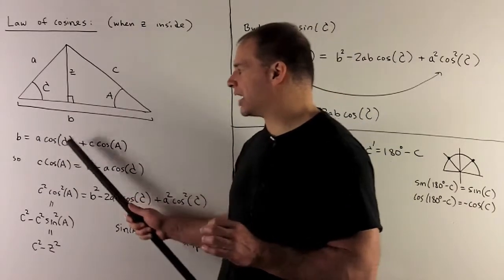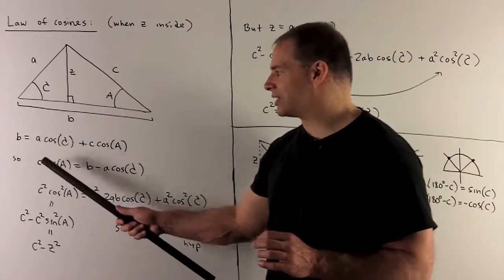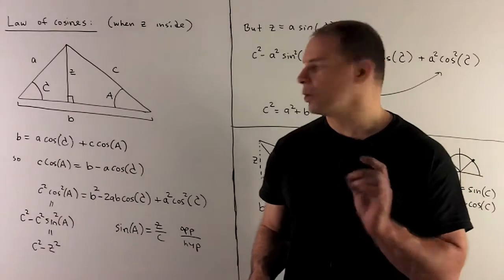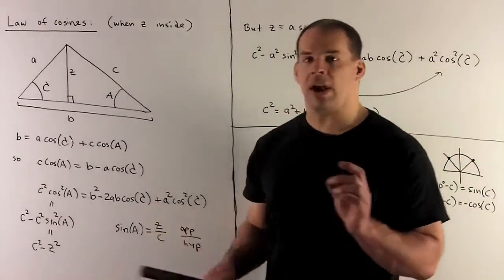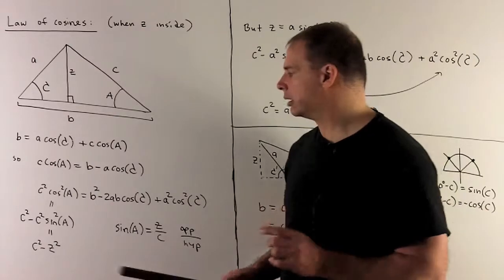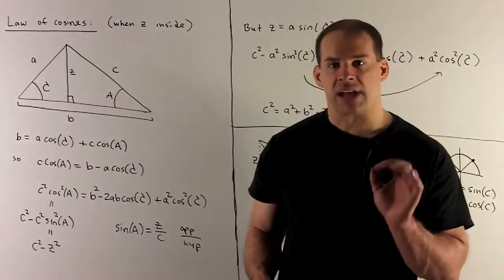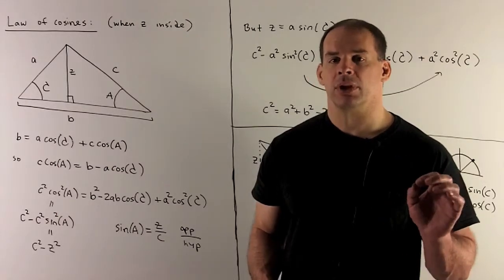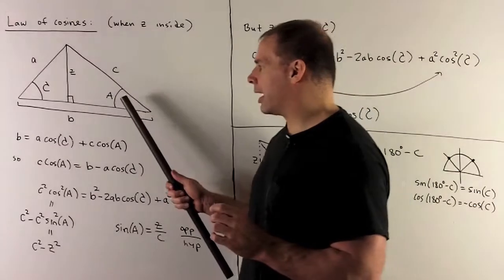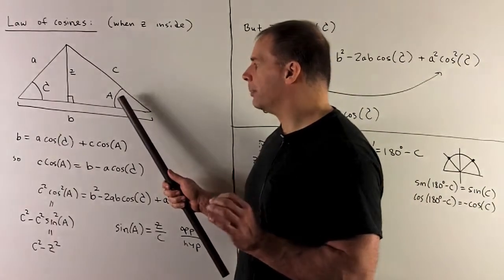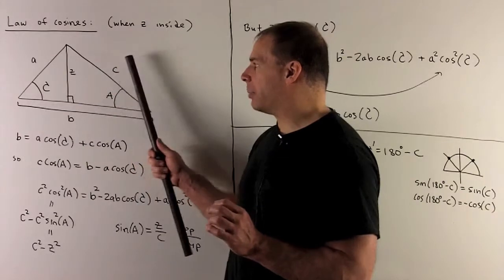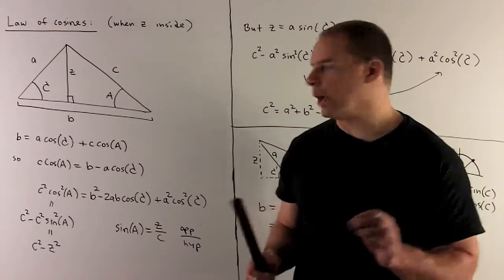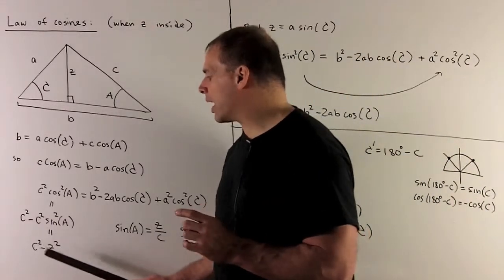I push a cosine c to the other side to isolate c cosine a, then square both sides. On the left-hand side I have c squared cosine squared of a, and I rewrite cosine squared as 1 minus sine squared. Sine squared of a doesn't appear in our final answer, so I need to eliminate it. Looking at the picture, sine of a is the opposite over hypotenuse, z over c. Squaring gives z squared over c squared. The c squareds cancel, leaving c squared minus z squared.